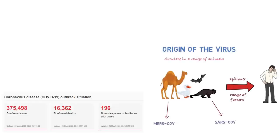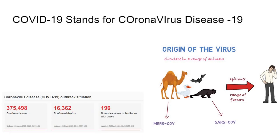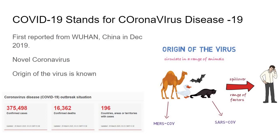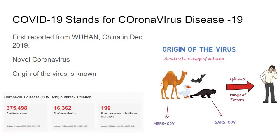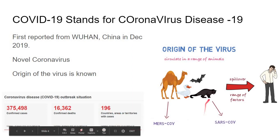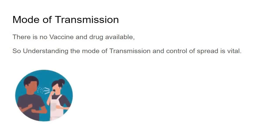As of 26th March 2020, we have crossed 4 lakh cases and 20,000 deaths across 196 countries. COVID-19 stands for coronavirus disease 19 — it is named 19 because it was first reported in Wuhan, China in December 2019. Initially it was called novel coronavirus, as nobody would have known about this virus in November 2019. The origin, that is the animal reservoir, is unknown. Understanding the mode of transmission is vital because there is no vaccine or drug available.